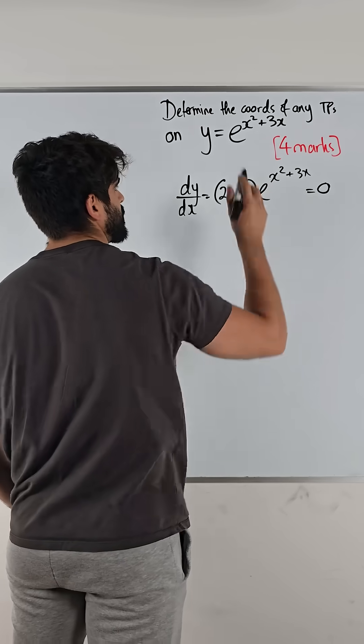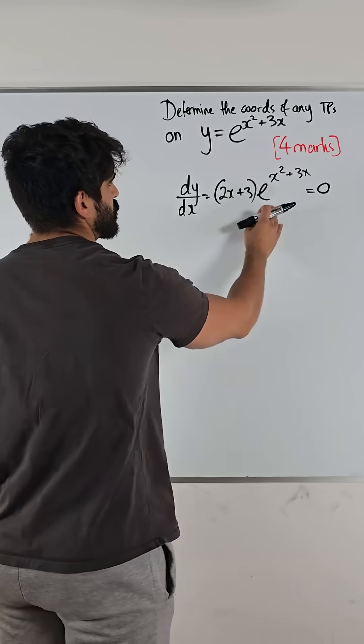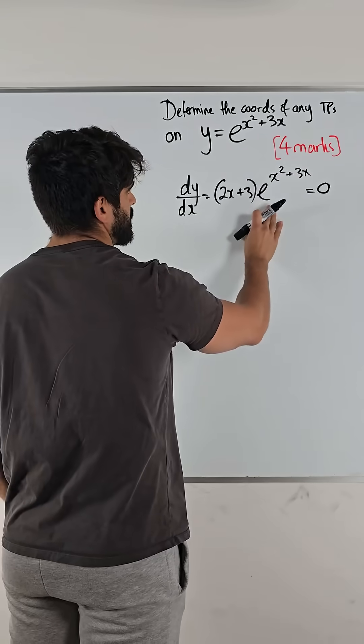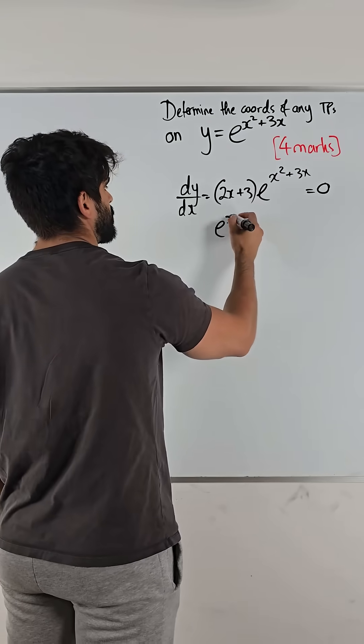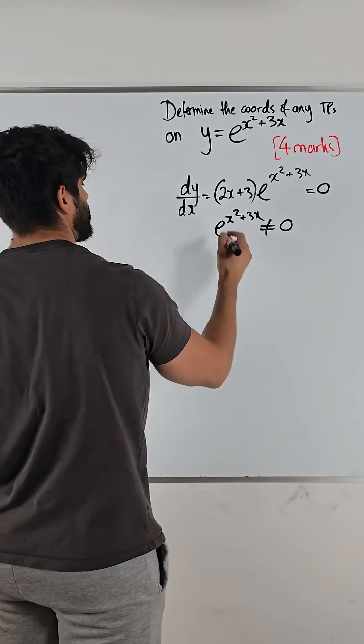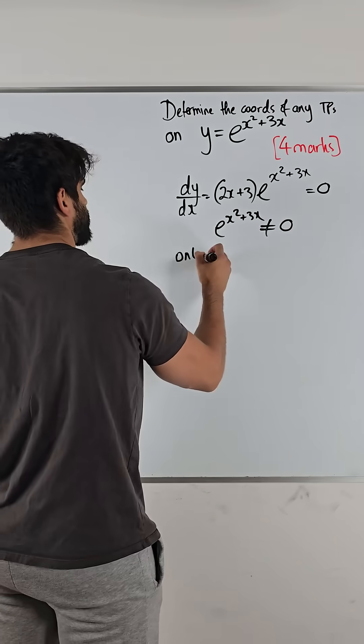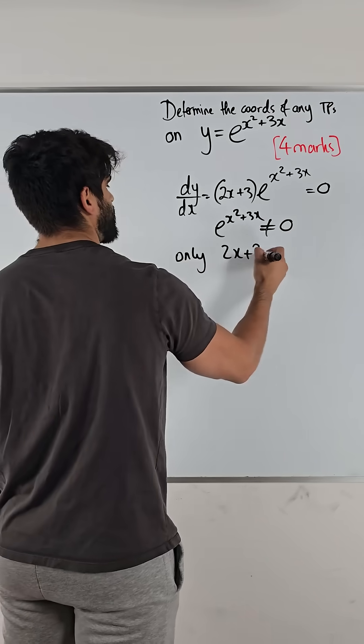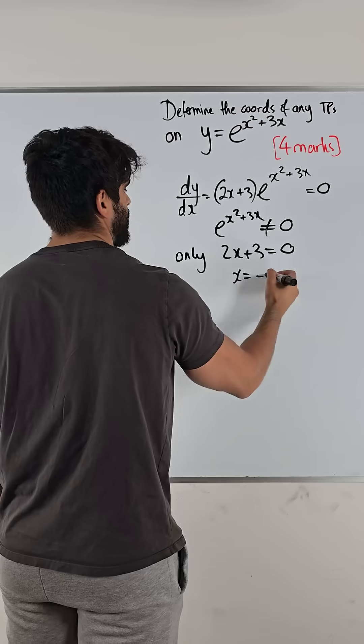Then you make that equal zero. Now, exponentials with a base being positive can never equal zero. So it means only 2x plus 3 can equal zero, which means x is minus 3 over 2.